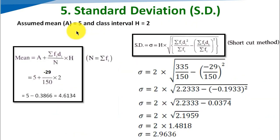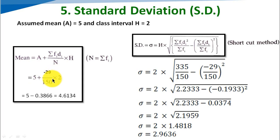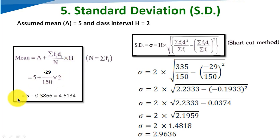For the mean, we apply the equation: mean = a plus (sigma fi·Di divided by n) times h, where a is the assumed mean of 5. So: 5 plus (minus 29 divided by 150) times 2. Because of the negative sign, the answer is 4.6134. Then we have the equation for standard deviation using the shortcut method.